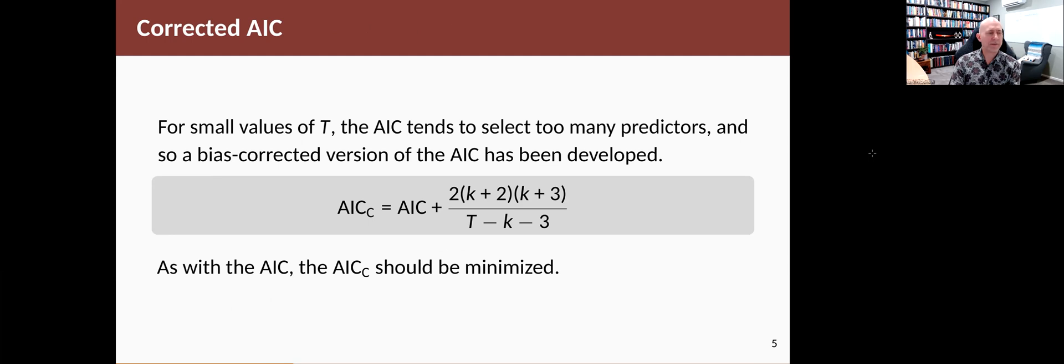After Akaike, some other people came along and came up with a corrected version of it which works better for smaller samples. And so we tend to use this one these days, the AICc, and it just adds this extra term in, which if T is very large, this term becomes negligible. And so the AICc is the same as the AIC asymptotically. So we're going to try to minimize the AICc statistic when we choose a model.